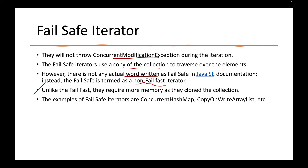What is the disadvantage of fail-safe? They require more memory. Obviously, if you are using a copy of your collection, you need extra memory to make that copy and then traverse over it. The examples of fail-safe are ConcurrentHashMap and CopyOnWriteArrayList. These are the thread-safe collections. They are thread-safe because they have fail-safe iterators in place, so even if structural modification is done while traversing, it will not be affected.